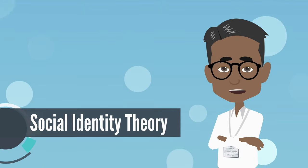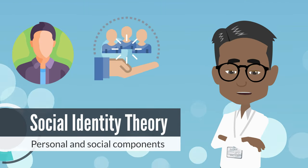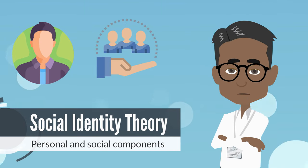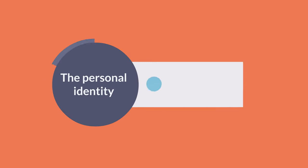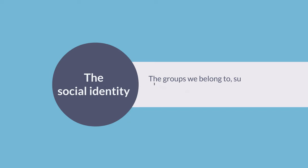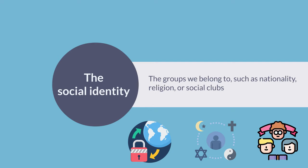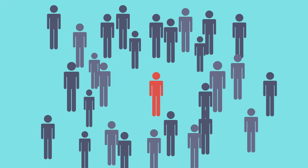According to Social Identity Theory, our identity is comprised of both personal and social components. The personal identity includes individual characteristics and experiences, while social identity pertains to the groups we belong to, such as nationality, religion, or social clubs. These group memberships contribute to our self-image and how we perceive our place in society.